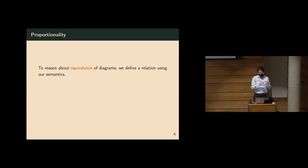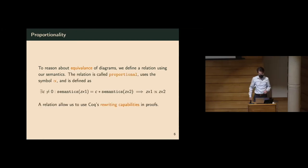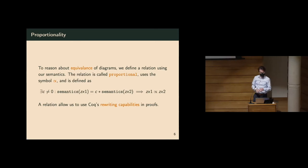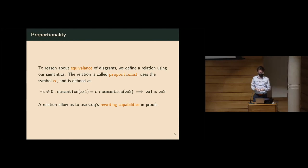Once we have structure and meaning, we need some way to talk about equivalence of diagrams. We do that in Coq by defining a relation. Our relation is: is there a constant multiplier difference between the two semantics of these diagrams? If so, we call them proportional. We then prove to Coq that this is actually an equivalence relation. Once we do that, we get access to all these nice rewriting capabilities. Rewriting in Coq allows us to say we have a diagram in our proof environment, and if we want to change some nested part within it, we can use a Coq tactic called rewrite to perform this rewrite within the diagram, update the proof goal context, and complete the proof.